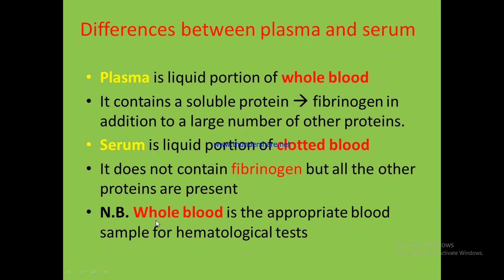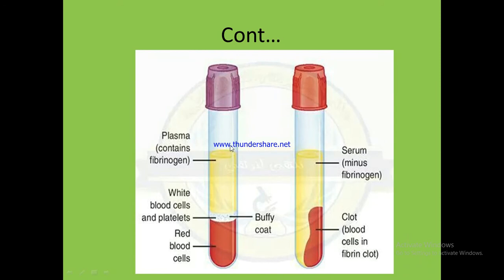Whole blood is the appropriate blood sample for hematological tests. If we want to collect blood for hematology, the tube must contain an anticoagulant. Here are examples of plasma and serum tubes.